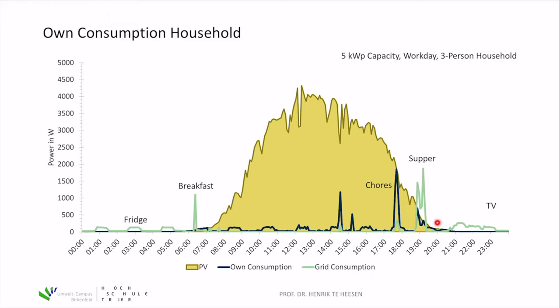In the evening, energy demand from watching TV or using a computer cannot be fulfilled by the PV system anymore, so electricity is taken from the grid. You can see the refrigerator profile again and some additional demand. In this case there is no battery — just the PV system — and the yellow marked area represents the PV energy that is fed into the grid.